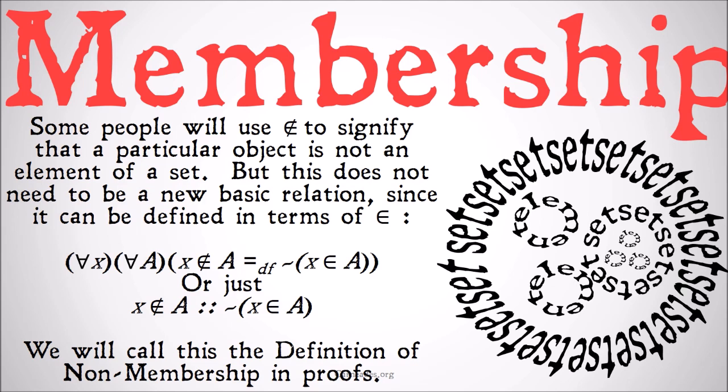We're saying that when 'X is a member of A' is true, then 'X is not a member of A' is false, and vice versa. We're going to call this, because it will show up in proofs, the definition of non-membership.